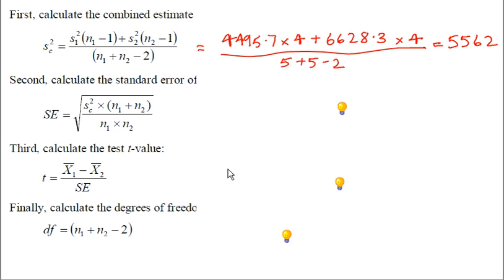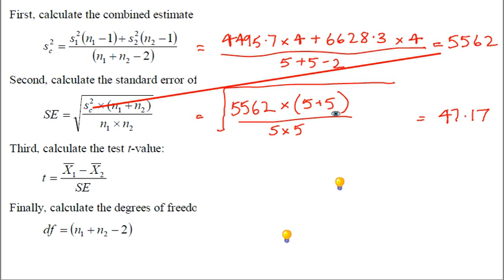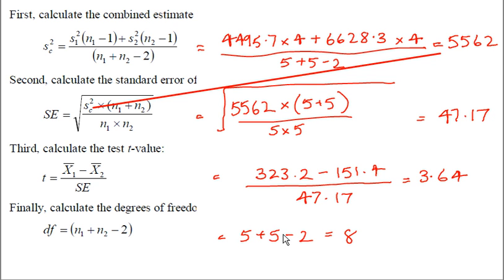We then plug that value into the formula over there to give us the standard error based on the combined variance. So it's square root of 5562 by 5 plus 5 or 10 divided by 5 times 5 or divided by 25 which gives us 47.17. Finally we can calculate the t value relatively simple as mean for control take away mean for carbon tet divided by standard error 3.64 and degrees of freedom of course are 8.